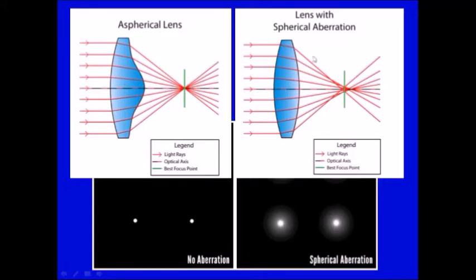So instead of having different focuses, the whole rays will come to a focused one point. So this is the image seen without aberration and here the image seen with the aberration.